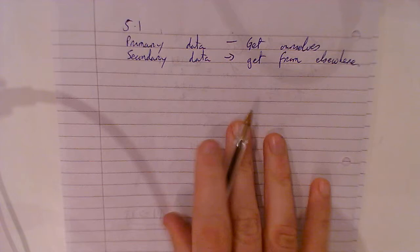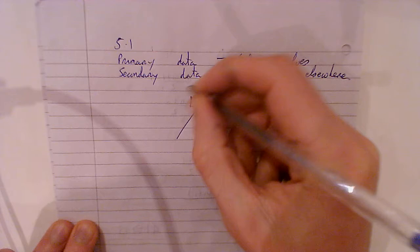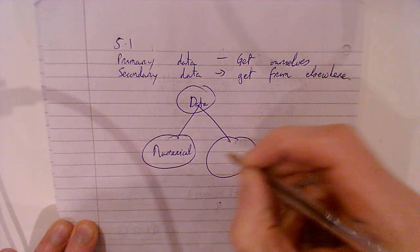Now, two types of data. That's the two different ways you get the data, but two types of data. Data will always go into numerical and categorical. All of this is in your chapter, so it's not that hard.